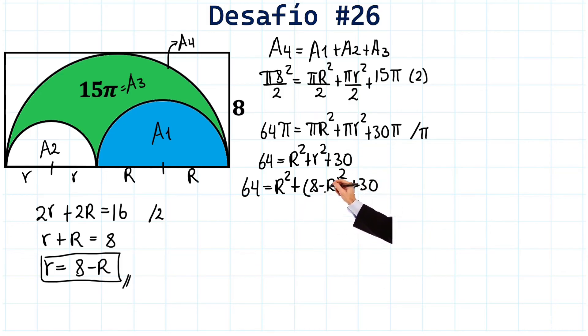And now we are going to solve this binomial squared. We have 64. Here we have R squared. Very well. Plus 8 squared, which gives us 64. The double product. The first by the second gives us minus 16R. And the second term squared would give us plus R squared.